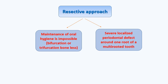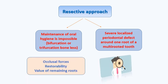The second approach is the resective approach. We use it when maintenance of oral hygiene is impossible — for example, a tooth with a furcation involvement that has massive bone loss.